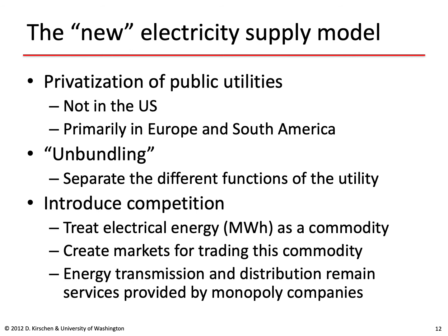The second part is to unbundle the different functions of the utility — in particular, separating generation from transmission and from retail and distribution. The third part is to introduce competition. To introduce competition, the first thing you need to do is treat electrical energy — the megawatt-hours or kilowatt-hours consumed — as a commodity, and then introduce markets where this commodity can be traded just like bushels of wheat or pork bellies. You still have to keep energy transmission and distribution as monopolies, because they are services rather than commodities, and there is no reason to have multiple sets of wires.